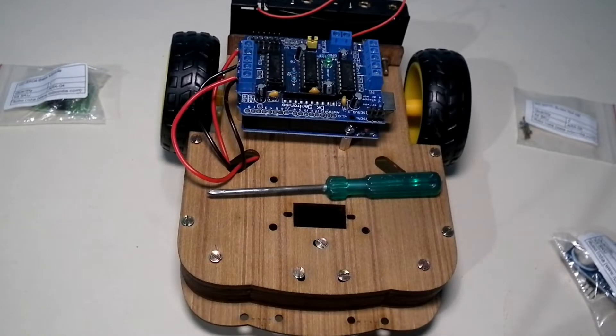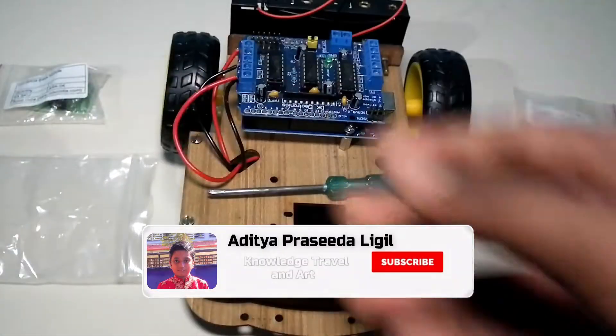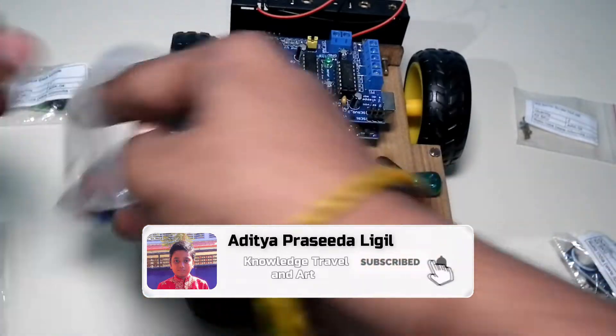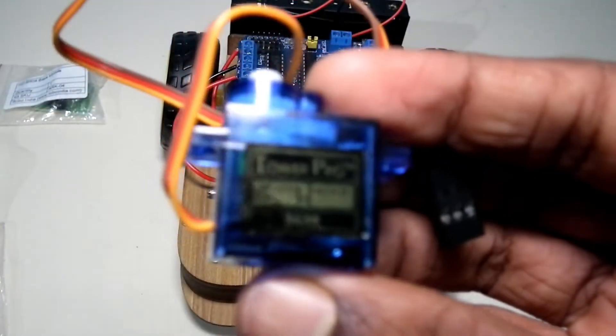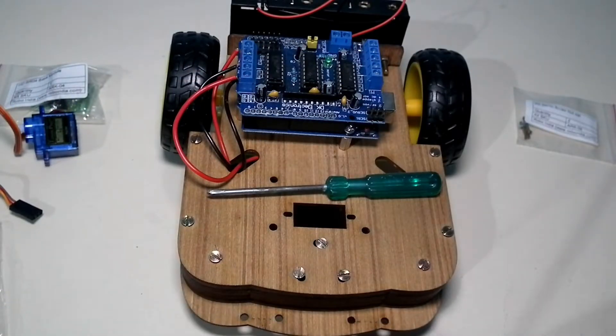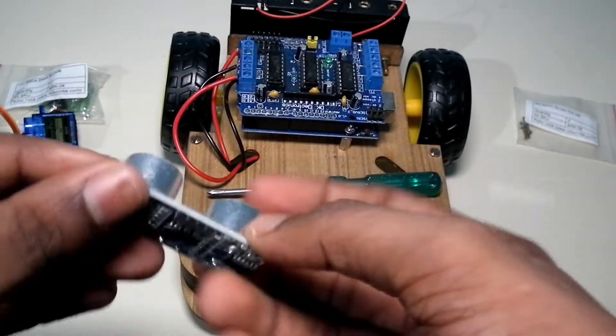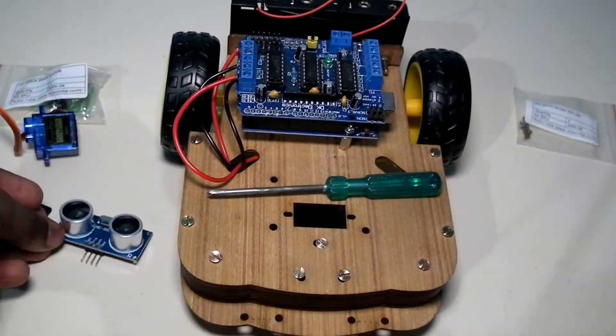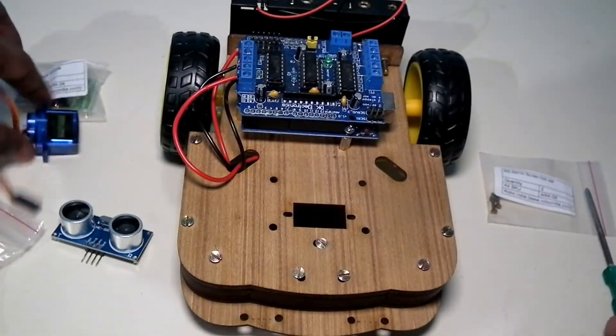The things required to make this obstacle avoiding robot are a servo motor with its accessories. This is the servo. And then we have the ultrasonic sensor. And we have some screw nut set. So let's begin with the servo motor.